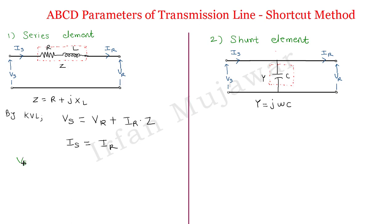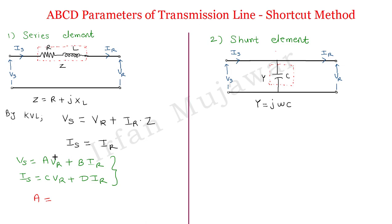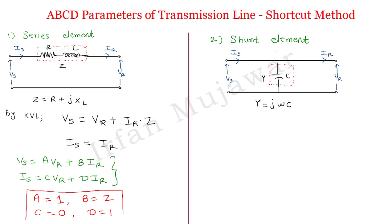Comparing with the standard equations — Vs equals A·Vr plus B·Ir, and Is equals C·Vr plus D·Ir — we get the ABCD parameters of the series element: A equals 1 (coefficient of Vr), B equals Z (coefficient of Ir), C equals 0 (no Vr term in the Is equation), and D equals 1.